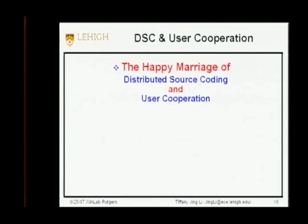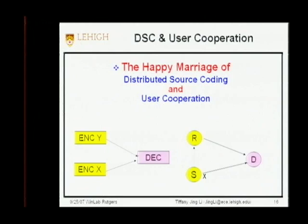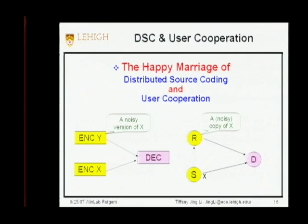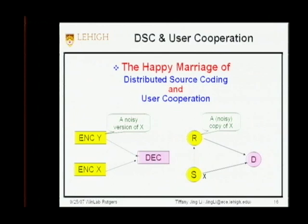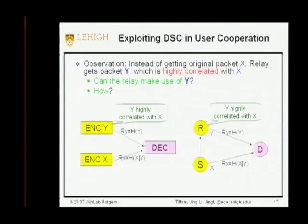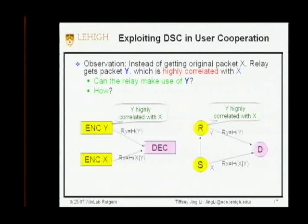Here is the key insight — the happy marriage of distributed source coding and user cooperation. In DSC, we have two highly correlated sources with one receiver; in user cooperation, we have source, relay, and destination. In DSC, we view one source as a noisy version of the other. In user cooperation, when the relay does not get a clean copy of x, it does get a noisy copy of x. So there is enough similarity. Instead of getting the original packet x, the relay gets packet y, which is highly correlated with x — and we can use DSC technology to exploit this.